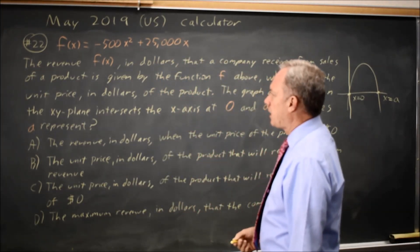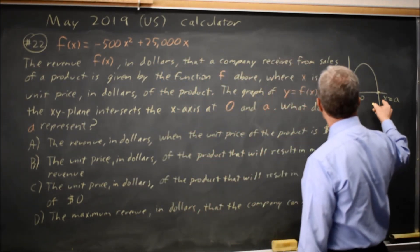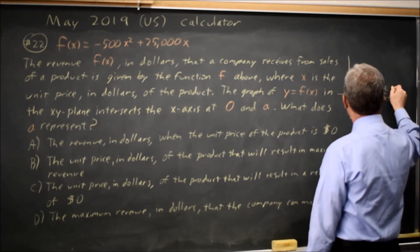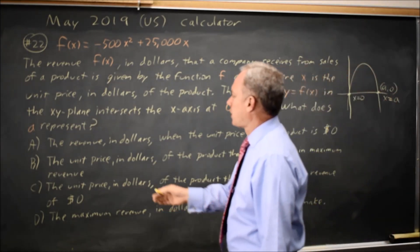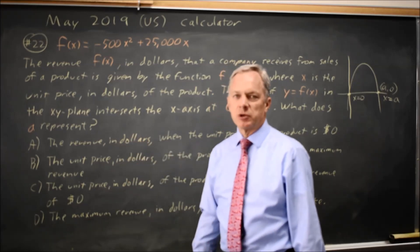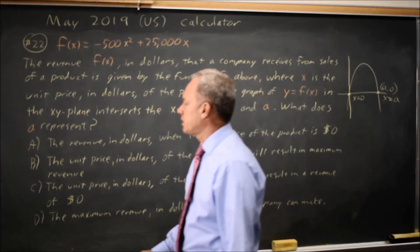And they ask what does A represent? A is the x coordinate for the point A0. And choice A is revenue, but revenue is the y coordinate, so A has to be wrong.